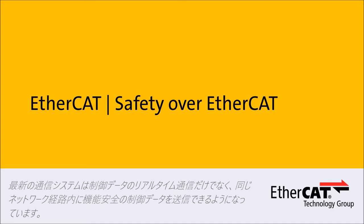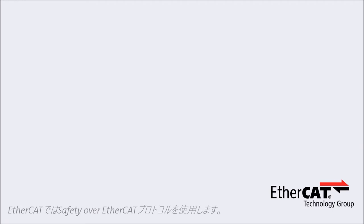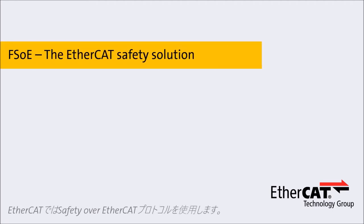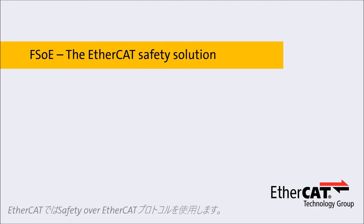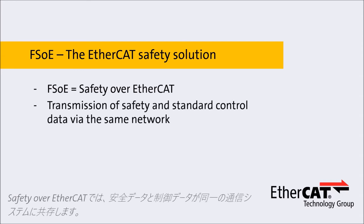Modern communication systems not only realize the deterministic transfer of control data, they also enable the transfer of safety-critical control data through the very same medium. EtherCAT utilizes the protocol Safety over EtherCAT. With Safety over EtherCAT, safety data and standard control data are transferred via one single network.